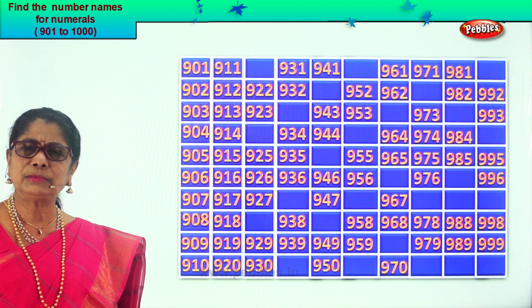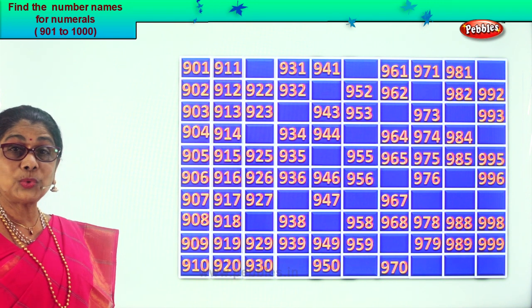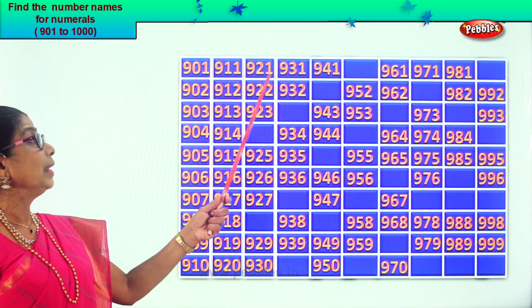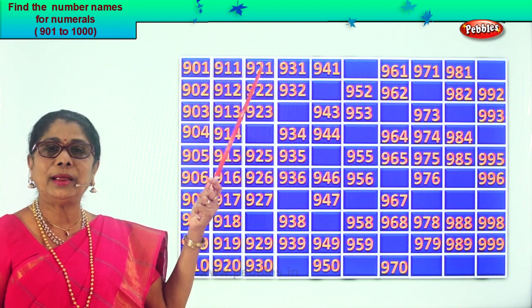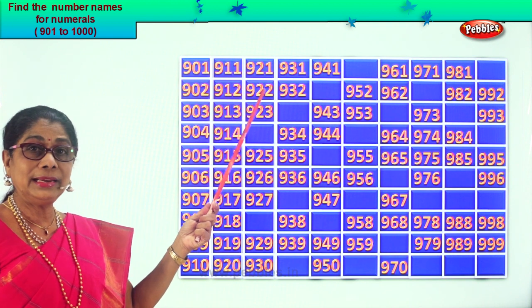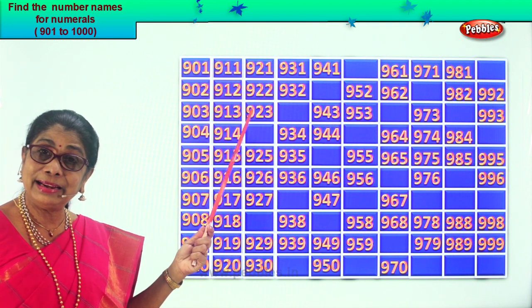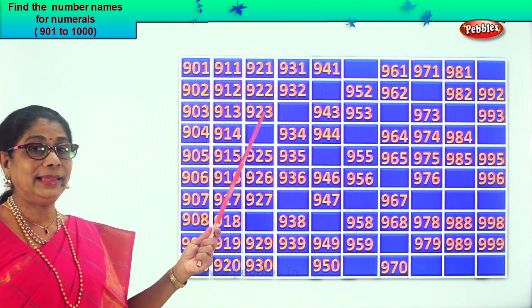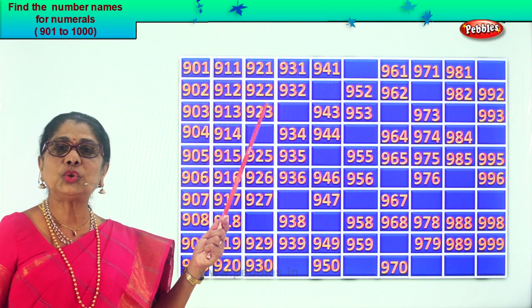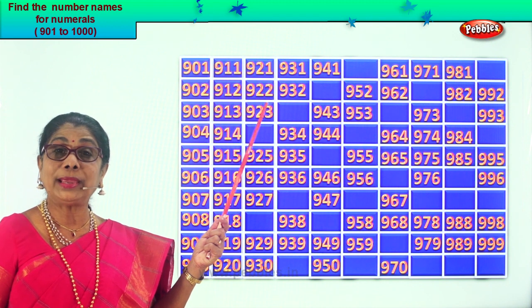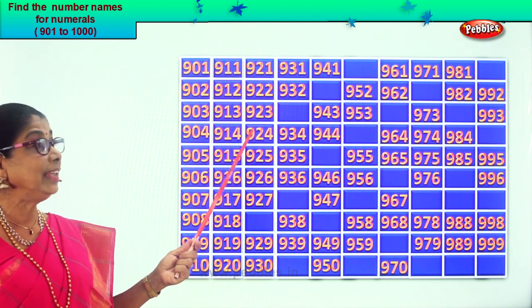What comes after 20? 21. So we get the next missing number, 921. After 21: 922, 923. After 23, 24. So we get the number 924.